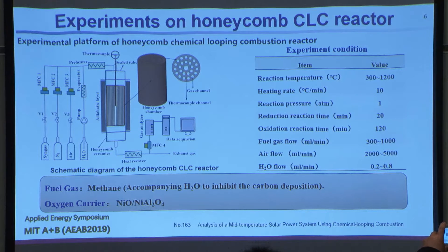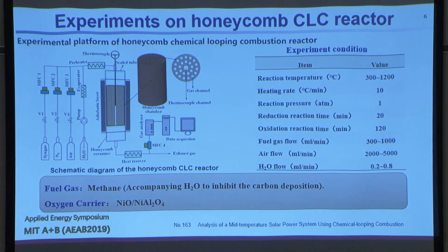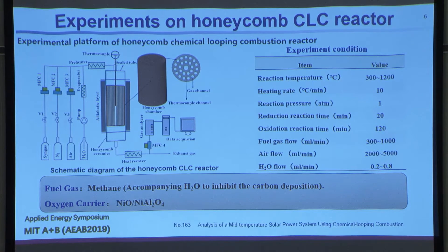This is our reactor — a honeycomb chemical looping combustion reactor. The left side is the gas input for methane or air, the middle is the reactor where we combine the reduction and re-oxidation reactors together, and the last section is the gas analysis. The experimental conditions use 300 to 500 degrees C for the reduction reaction and 1,200 degrees C for the re-oxidation reaction.